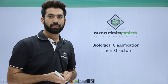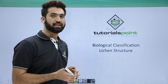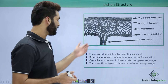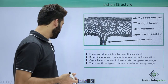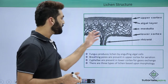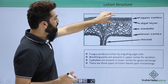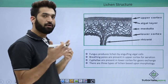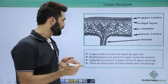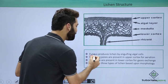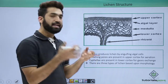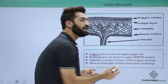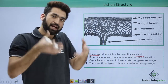In this session we'll be discussing lichen structure. You can see the lichen structure here. How does lichen get produced? The fungus partner engulfs the algae partner — the algal cell will be engulfed by the fungus.